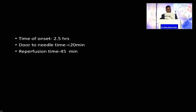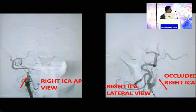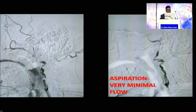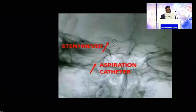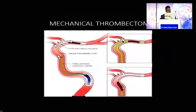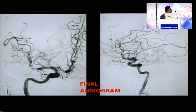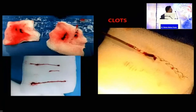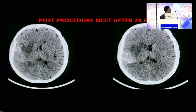We took this patient directly to the cath lab without wasting time. Door-to-needle time was less than 20 minutes and door-to-reperfusion time was 45 minutes. DSA revealed occlusion of the right internal carotid artery from its origin — no circulation in the brain from the right side. We performed mechanical aspiration thrombectomy with a stent retriever and aspiration catheter, retrieved the clot, and achieved complete TICI flow in the MCA with all branches filling. Post-procedure CT showed small infarct in the right MCA territory, especially basal ganglia and insular region, with a small reperfusion bleed.